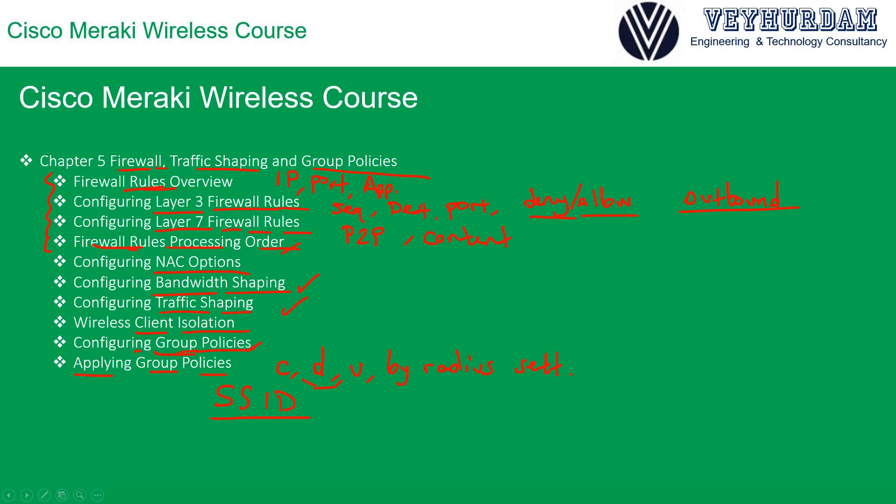Then Chapter 4 covers SSIDs — encryption and authentication methods and why we change them, and what benefits different methods provide. Lastly, we cover firewall rules, traffic shaping, and group policies. This Cisco Meraki wireless course goes over many different aspects of Cisco Meraki, and I hope you will benefit from it greatly. See you in Chapter 1, where we start discussing the Cisco Meraki wireless solution.